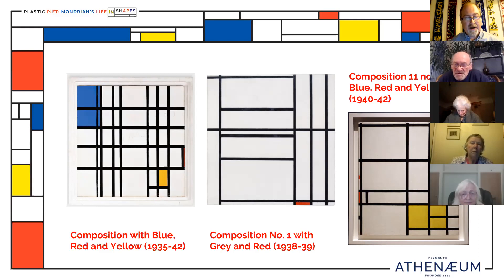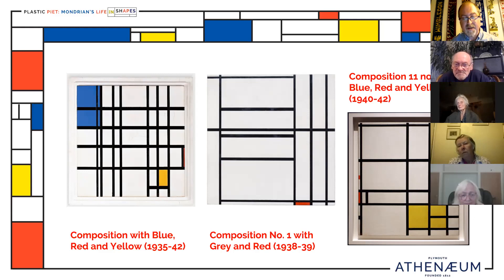On the 23rd of September 1940, Mondrian left Europe for New York aboard the Cunard White Star Lines ship RMS Samaria, departing from Liverpool. As work resumed on the other side of the Atlantic, the tram lines had expanded into a grid, as illustrated in Composition with Blue Red and Yellow (1935–42), Composition Number One with Gray and Red (1938–39), and Composition Number 11 with Blue Red and Yellow (1940–42) — essentially extensions of the double tram lines and compositions.